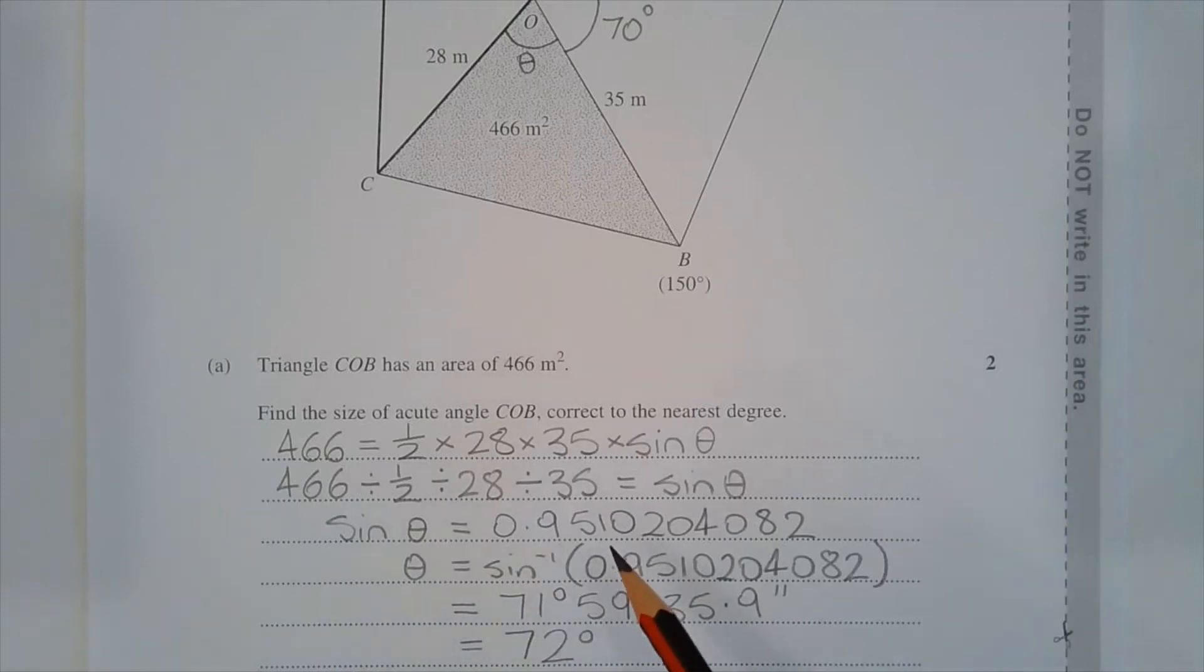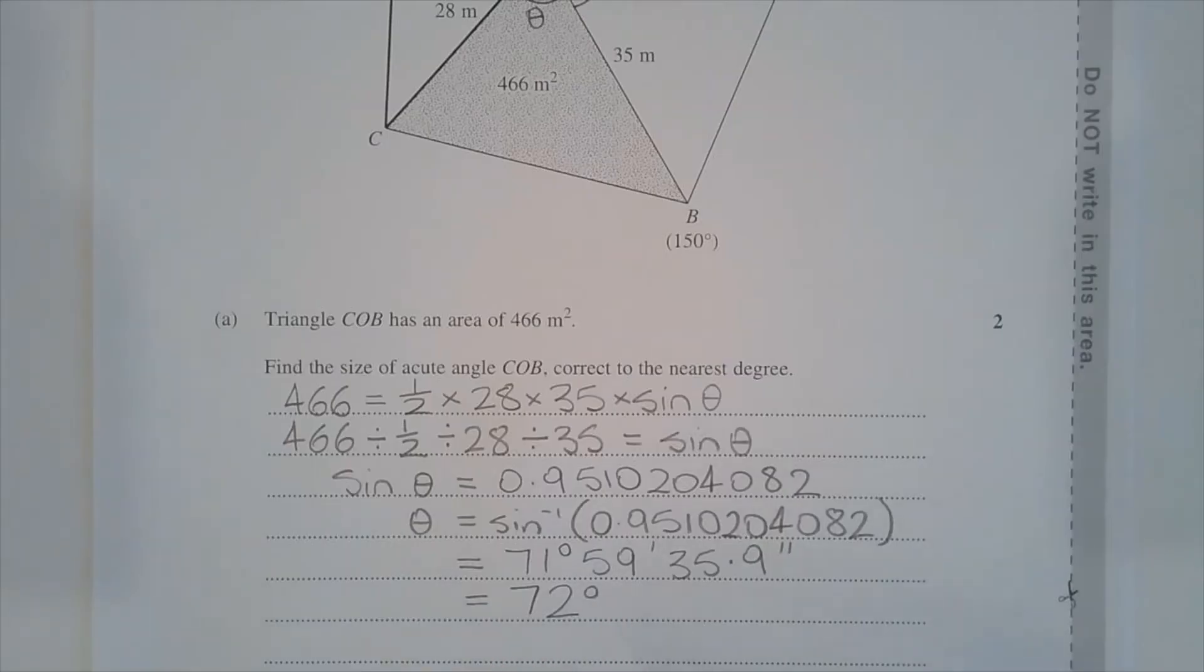And taking the inverse sine of both sides to make theta the subject of the formula, we have theta is equal to inverse sine of 0.9510204082. And that equals 71 degrees 59 minutes and 35.9 seconds. And rounding that to the nearest degree, that equals 72 degrees.